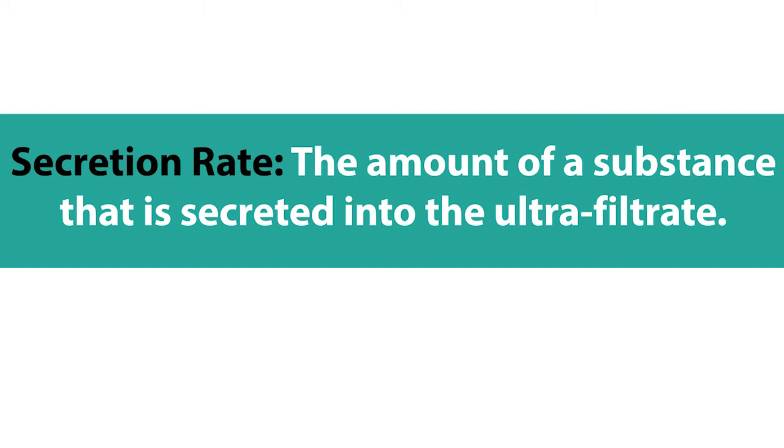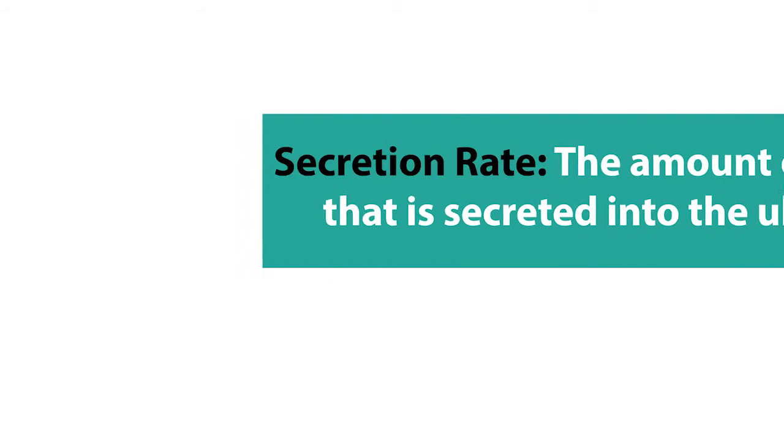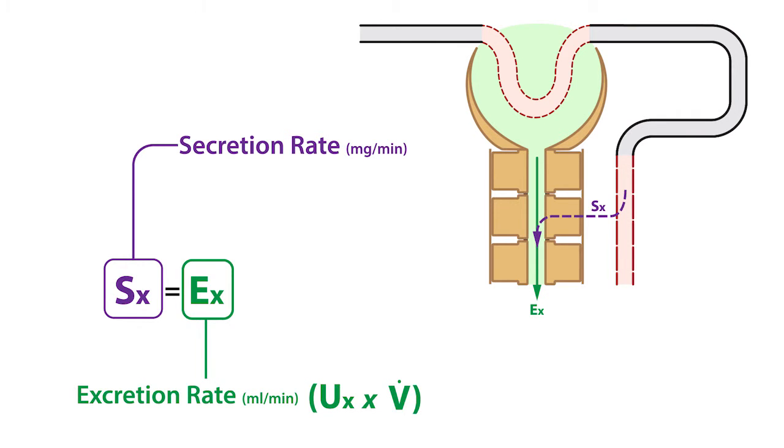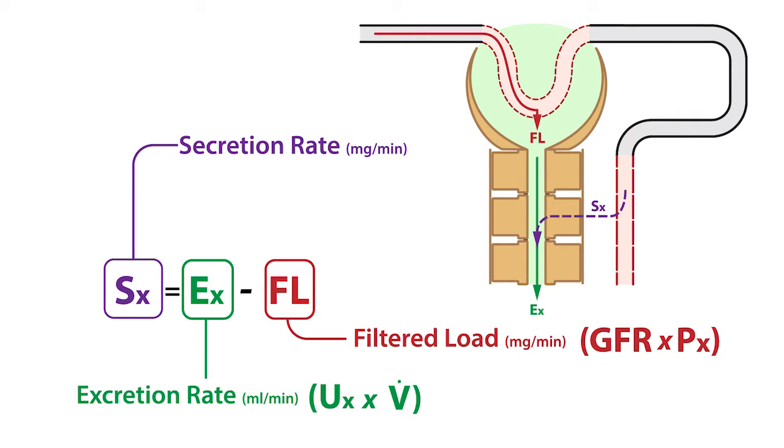The secretion rate of a substance is defined as the amount of that substance that is secreted or transported into the ultrafiltrate. This typically occurs along the proximal tubule but is not limited to the proximal tubule. The secretion rate of a substance, expressed in milligrams per minute, equals the excretion rate of that substance minus the filtered load of that substance.